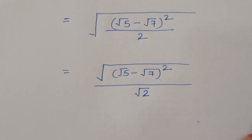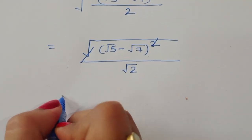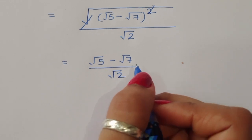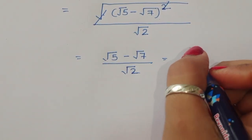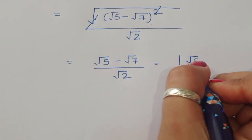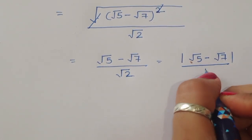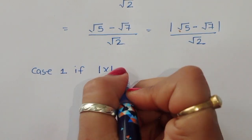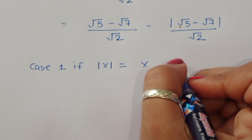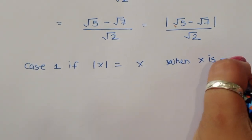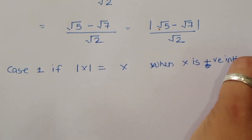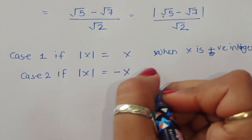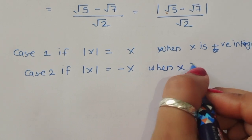Separating this term: √(√5 - √7)² divided by √2. The square cancels from the square root, giving us |√5 - √7| / √2. We know that mod of x equals x when x is positive, and mod of x equals -x when x is negative.